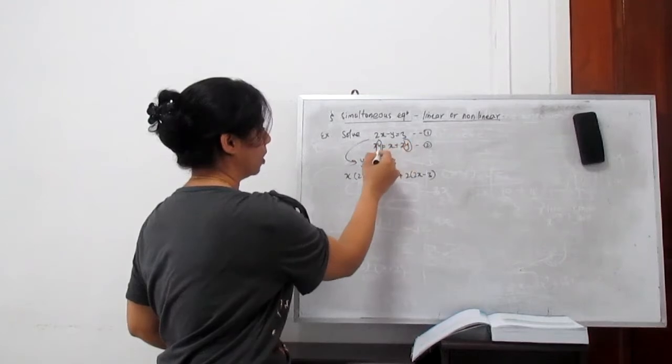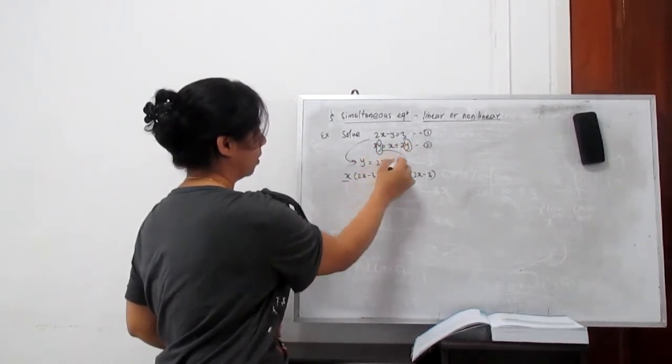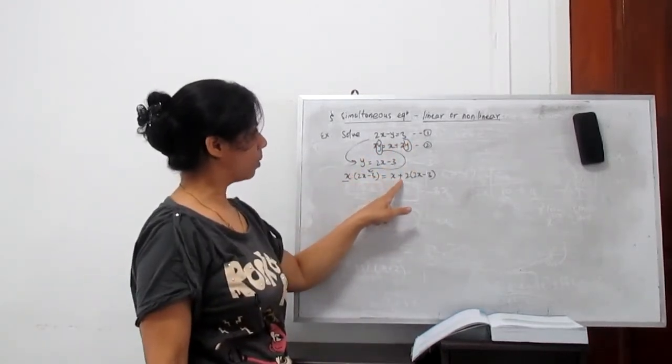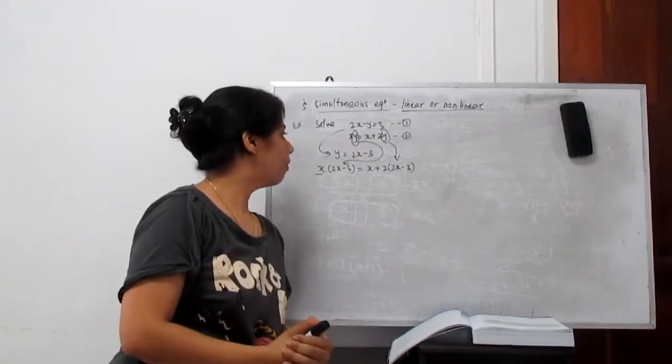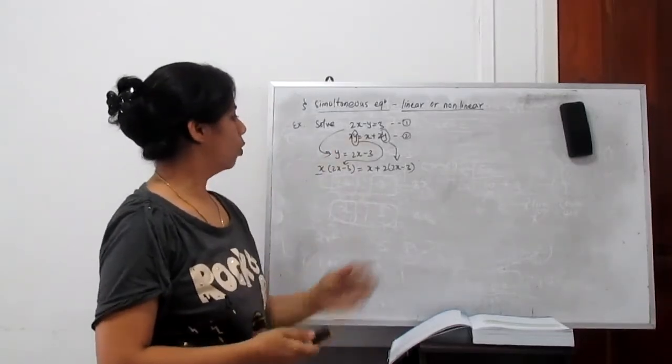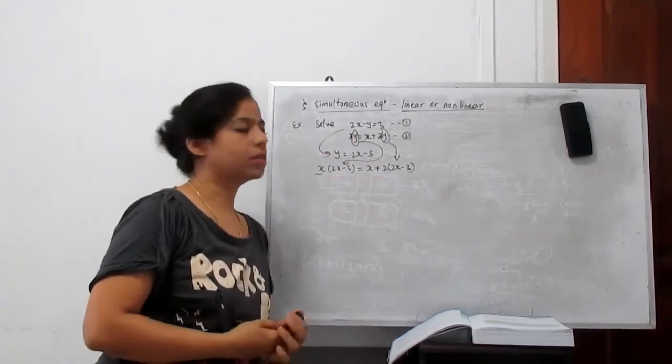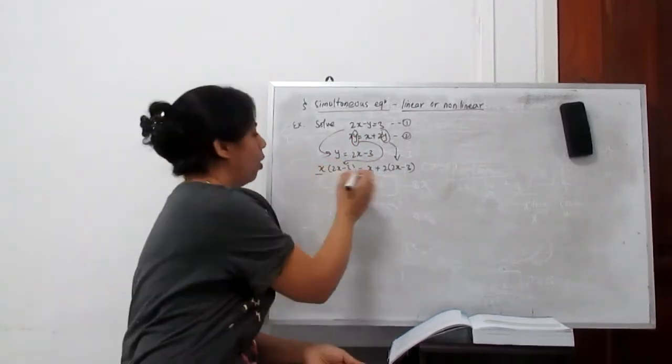So everywhere in equation 2, we substitute this value. So x times y is x times (2x minus 3) equals x plus 2 times (2x minus 3). Substitute the value of y in equation 2. We can see this now converts into only one variable equation, that is x.